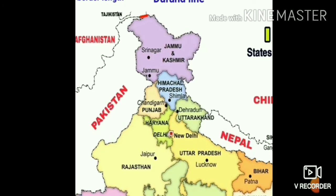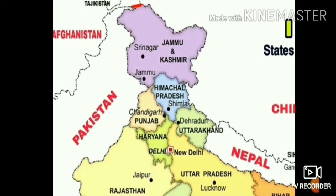There is also a border with Afghanistan, but it is a very little part — as you can see, a very small part touches Afghanistan, highlighted with the red line. The border with Afghanistan was called the Durand Line earlier, but later the Durand Line came to refer to the border between Afghanistan and Pakistan.